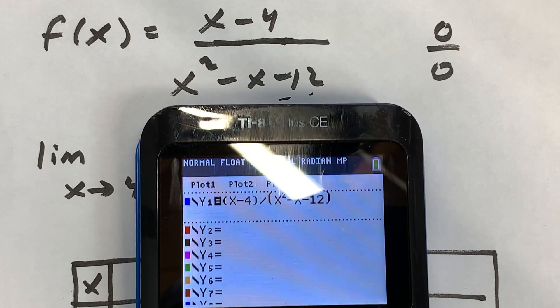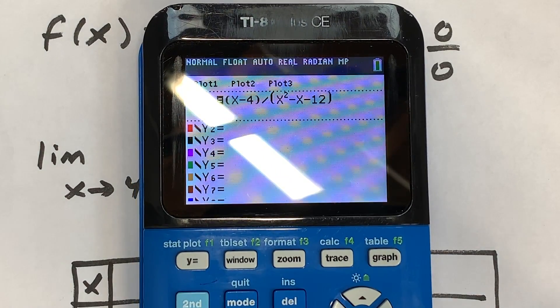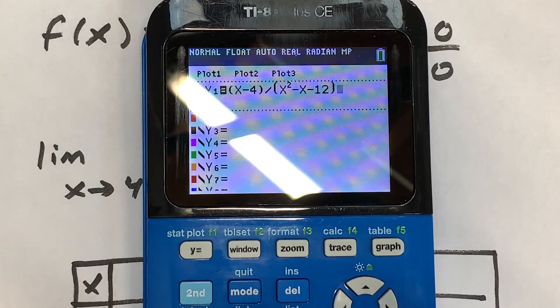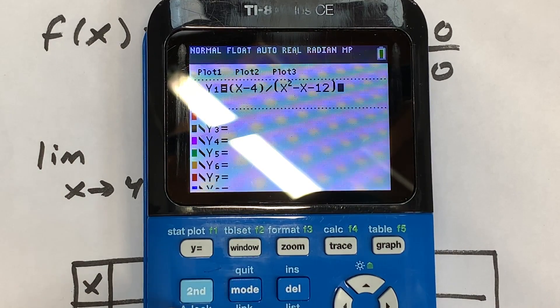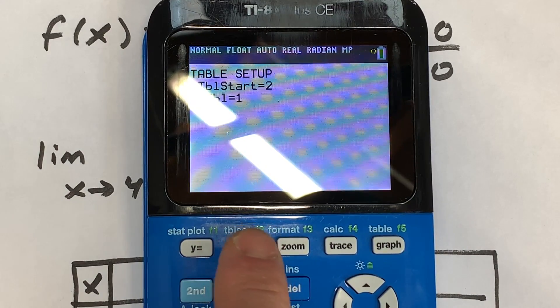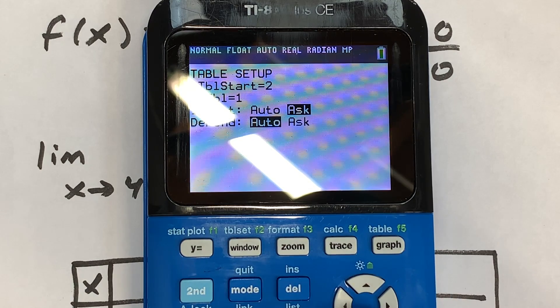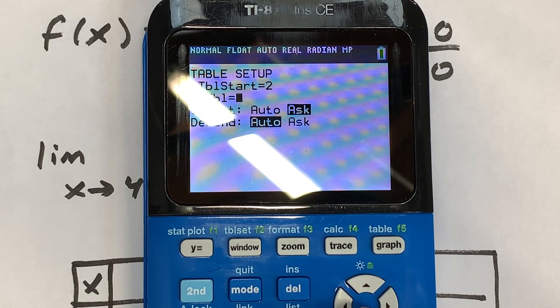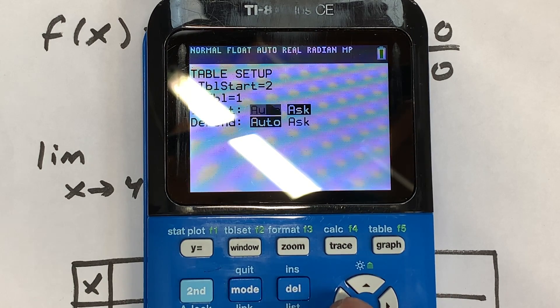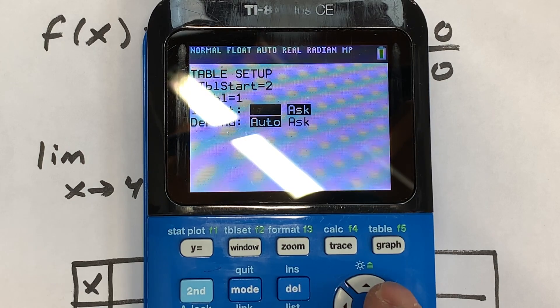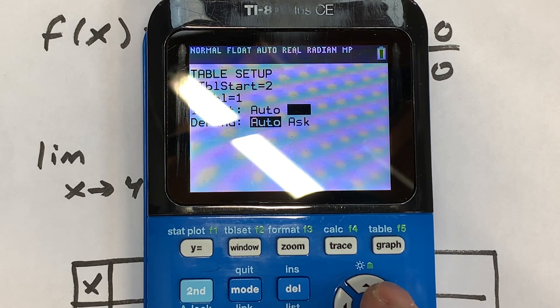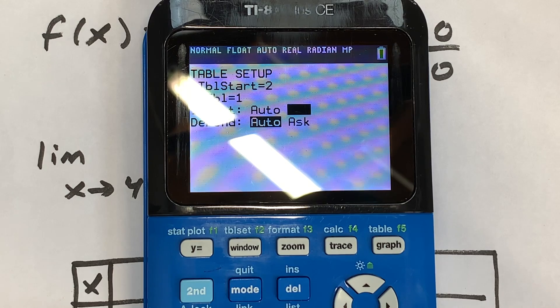Okay, so now before we go to our table, you want to go to where it says Table Set, right above Window. So press 2nd, Table Set. And what you want to make sure is that you're set not for Auto—which oftentimes is on for the independent variable—you want to make sure that it's on Ask. So we're going to make sure it's selected for Ask.